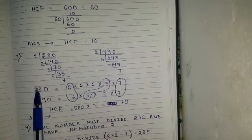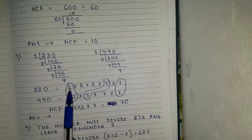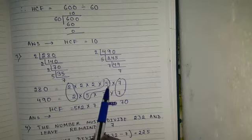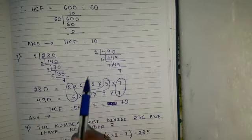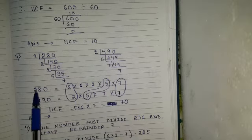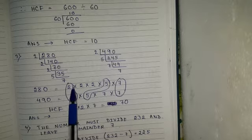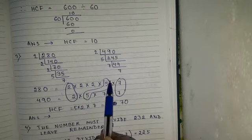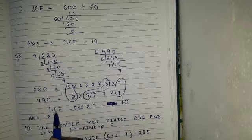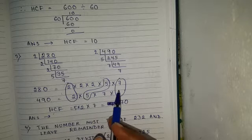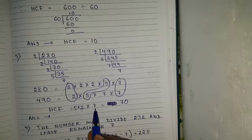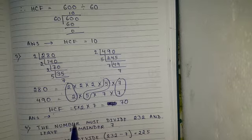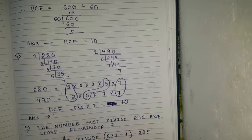Write down the numbers: 280 equals 2 into 2 into 2 into 5 into 7, and 490 equals 2 into 5 into 7 into 7. Mark the common factors: one 2 is common, one 5 is common, and one 7 is common. So HCF equals 2 into 5 into 7, and 5 twos are 10, 10 sevens are 70. The HCF is 70, which is the largest number that divides 280 and 490 without leaving a remainder.